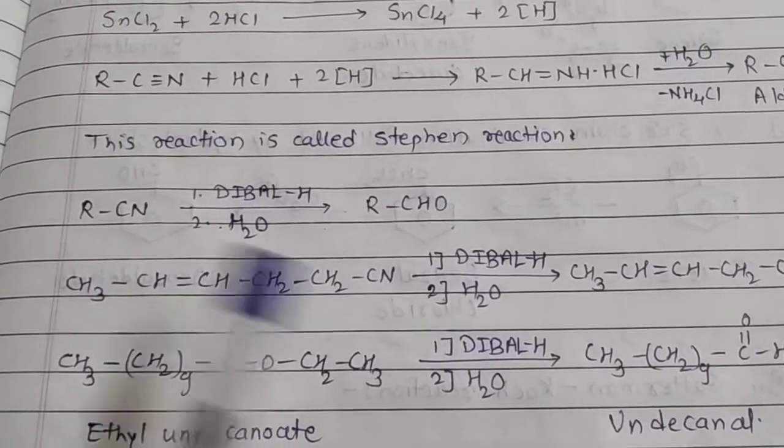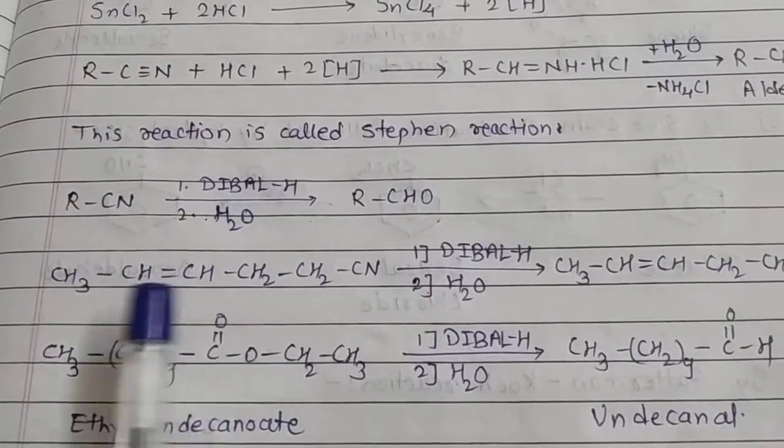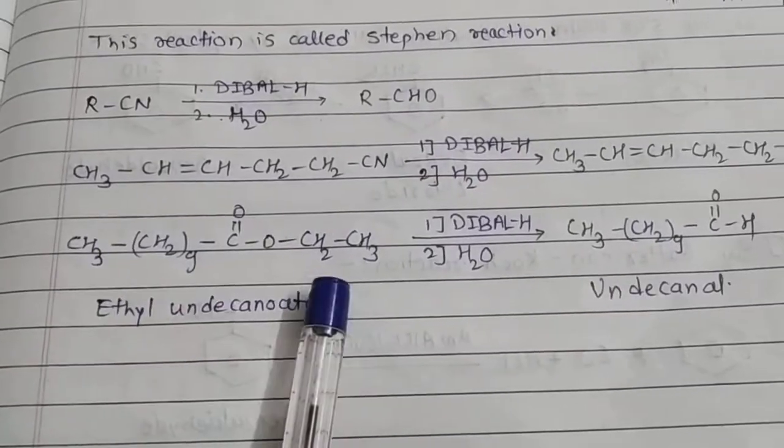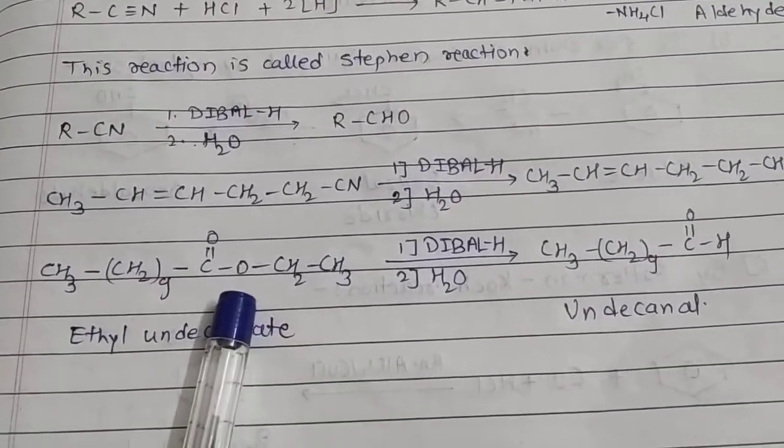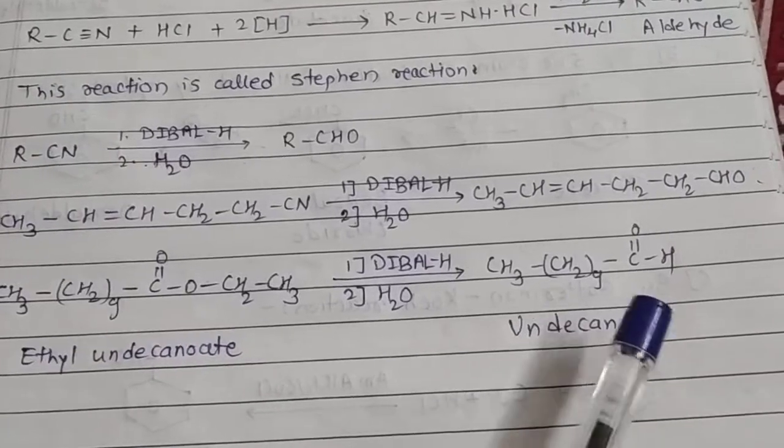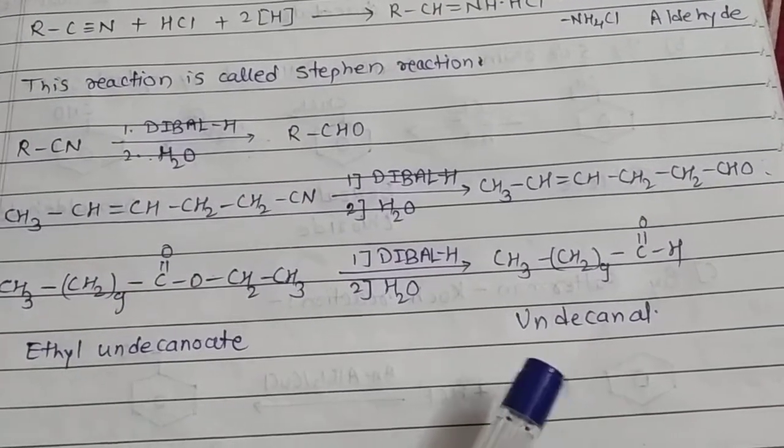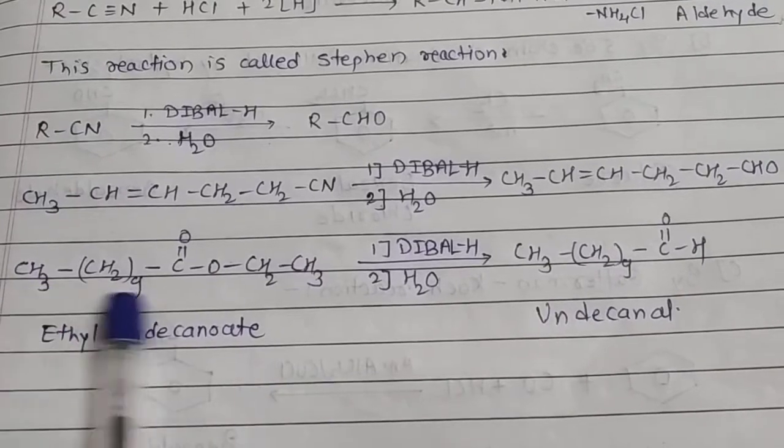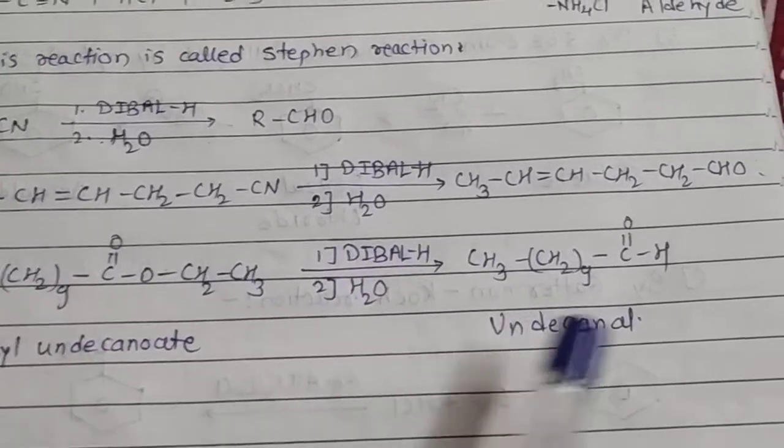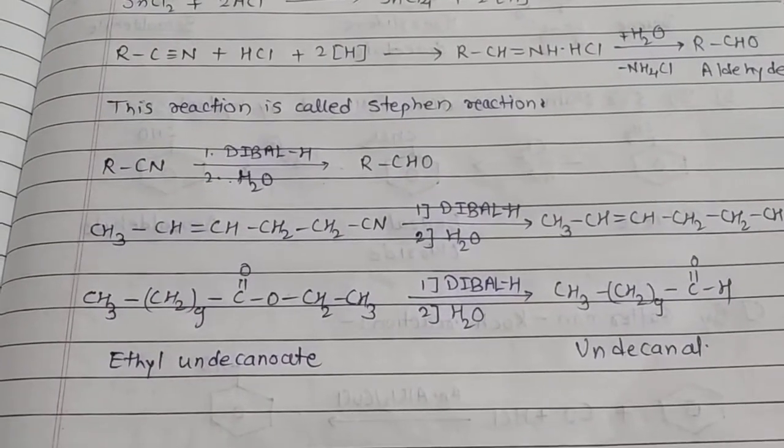Some examples are given. Cyanide gets converted into CHO in the presence of DIBAL-H and water. Again, this CN gets converted into CHO with DIBAL-H and water. Here there is an ester group. This part OCH2CH3 gets converted into H by DIBAL-H. The other product will be alcohol, but we write the main product, that is aldehyde. Ester can be converted into aldehyde by using this reaction, just replace OCH2CH3 by H.